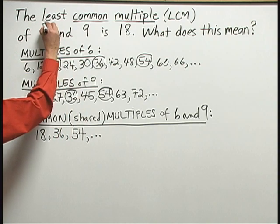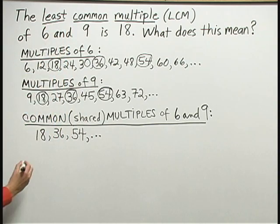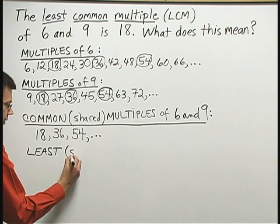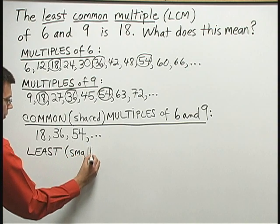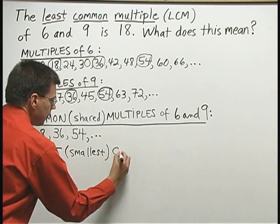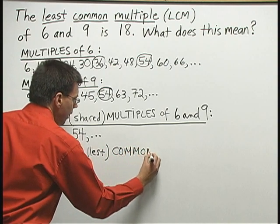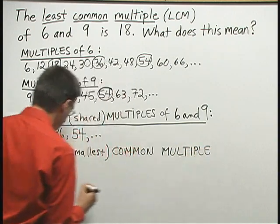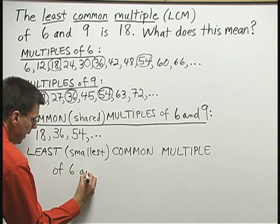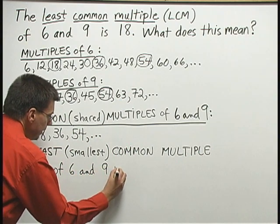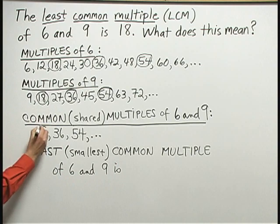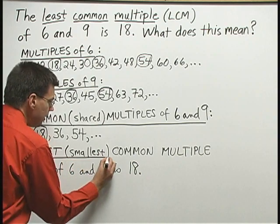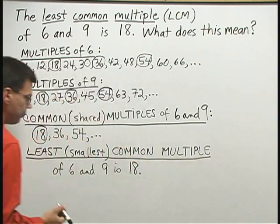Finally, let's think about the meaning of the word least here. The least common multiple means the smallest of the common multiples. So the least common multiple of 6 and 9 is 18. The smallest of those common multiples. There's only one least common multiple of those two numbers.